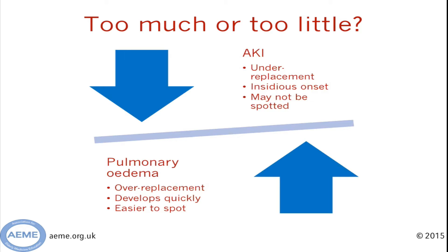The net result is that maintaining a careful balance between giving too much fluid and not enough can be hard. You need to consider the clinical status of the patient as well as the fluid balance chart and the blood results. A general rule of thumb, however, is that it is easier to see when too much fluid has been given and correct that, than when too little has been given and the patient has acute kidney injury.